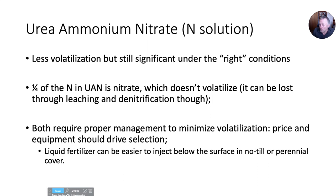The liquid form urea ammonium nitrate (UAN) at 28 or 32% nitrogen is very commonly used in Wyoming. The volatilization risk is less, but still significant under the right conditions. Part of the reason it's less is that a quarter of that nitrogen is nitrate, which doesn't volatilize — though it can be lost through leaching and denitrification. Urea, UAN, and ammonium sulfate all require proper management to avoid volatilization, so you really want to consider price and equipment considerations perhaps more so than volatilization risk, because you'll have to do the right management to minimize losses no matter what.